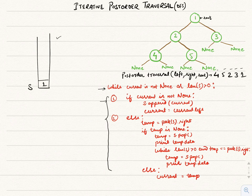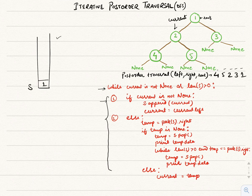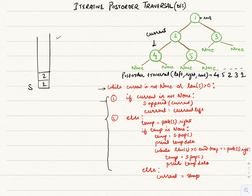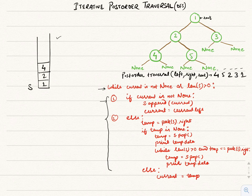The length of the stack is greater than zero so the loop continues. Current is still not none, so we append current (node 2) to the stack and move current to its left. The loop continues again — current is not none, so we append 4 to the stack and move current to current's left.